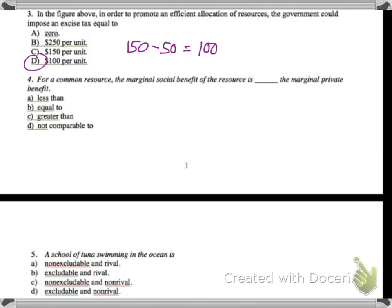So for a common resource, the marginal social benefit of the resource is blank, the marginal private benefit. So let's draw it out here. If you have this here, here's your graph, and let's say this is your private marginal benefit, and this is the society's marginal benefit. If you just look at this, this kind of looks like monopolistic competition or monopoly, so you should have some prior knowledge of that. You should notice that this is actually less than the private marginal benefit here. So the social benefit is less than the private marginal benefit here. So it's because of something called tragedy of the commons.